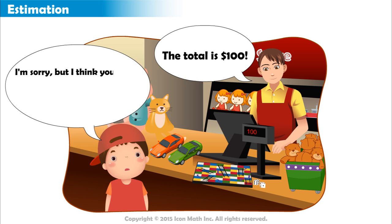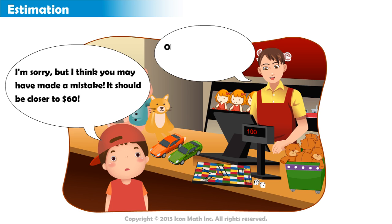I'm sorry, but I think you may have made a mistake. It should be closer to $60, said Cody. And the cashier says, let me see. Oh, you're right. I rang up the video game twice. The correct total is $61.